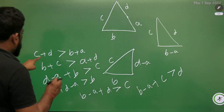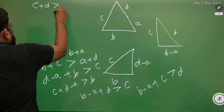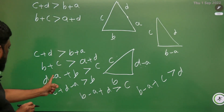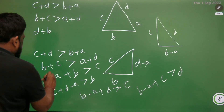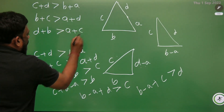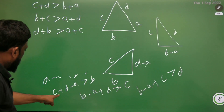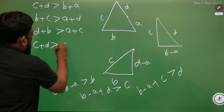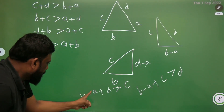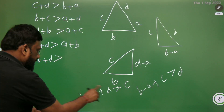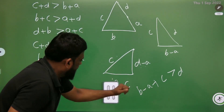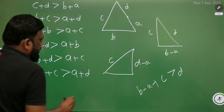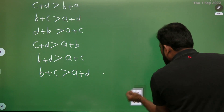Now let me list all conditions. The first is: C plus D is greater than B plus A. The second is: B plus C is greater than A plus D. Taking A to the other side gives D plus B greater than A plus C. Also, C plus D greater than A plus B, and B plus D greater than A plus C.